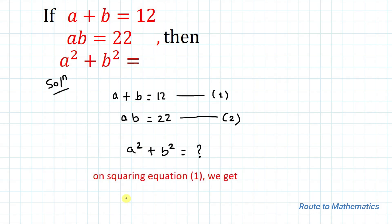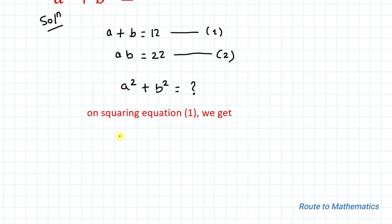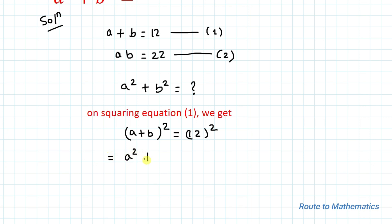Let's square equation 1. Squaring means we square both the left-hand side and the right-hand side. So a plus b whole square equals 12 square. We apply the algebraic identity: a plus b whole square equals a squared plus b squared plus 2ab, which equals 144.